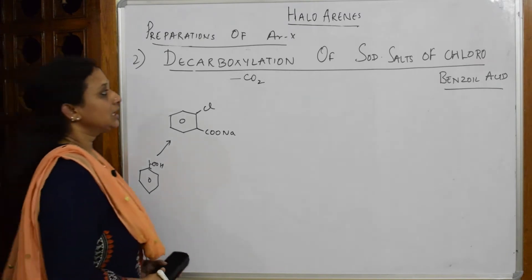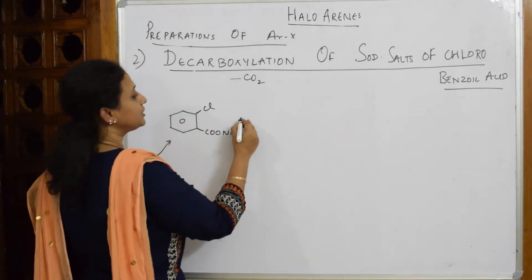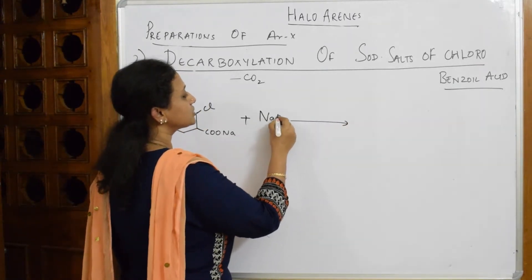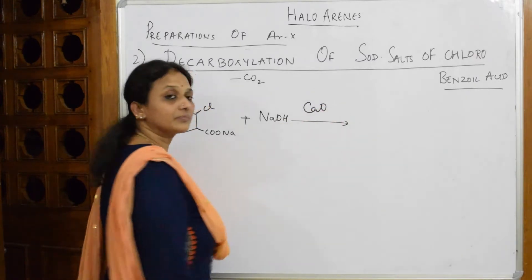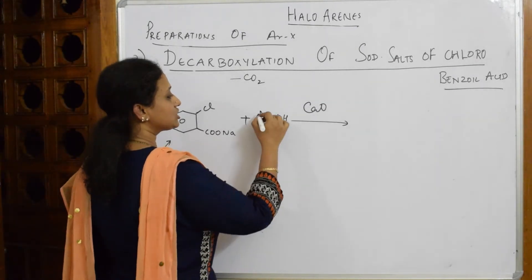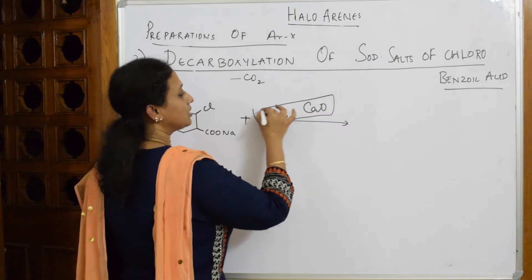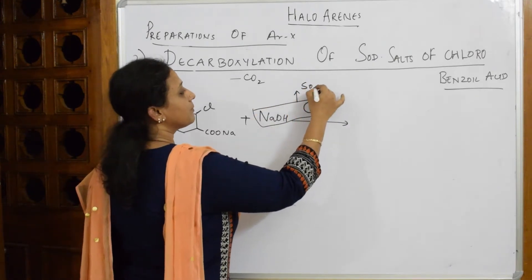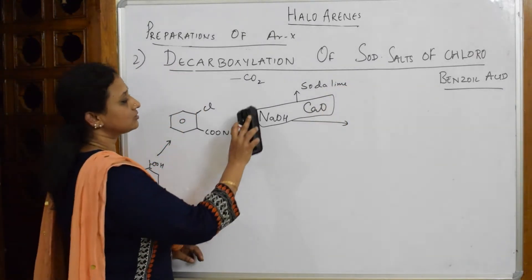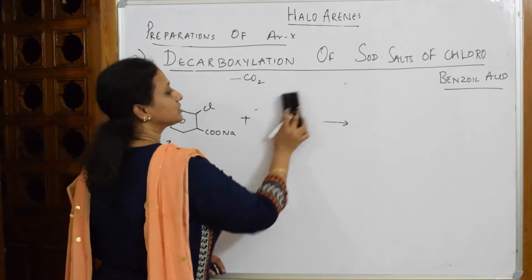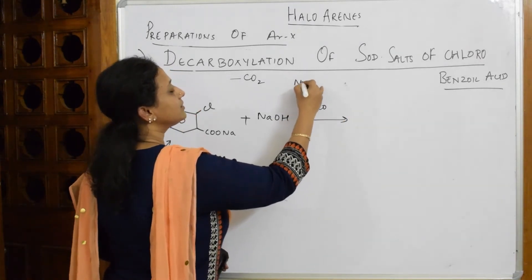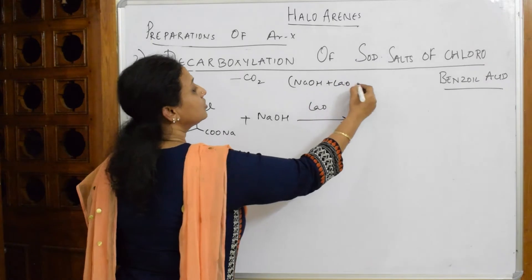Now I have to prepare my ArX. Observe carefully — I am going to add NaOH in the presence of calcium oxide. What is this combination? Sodium hydroxide and calcium oxide together are called soda lime. So NaOH plus CaO is called soda lime.